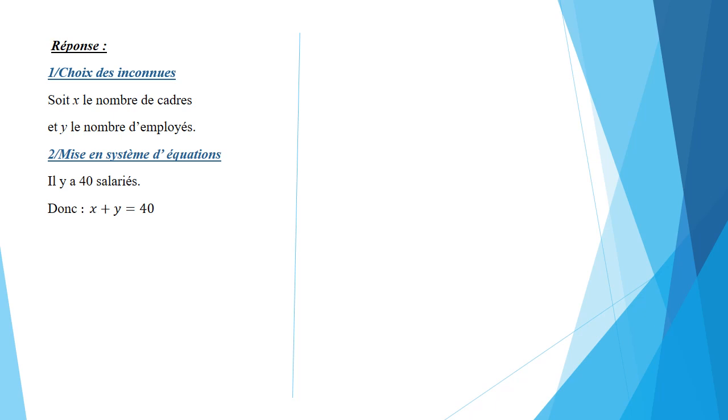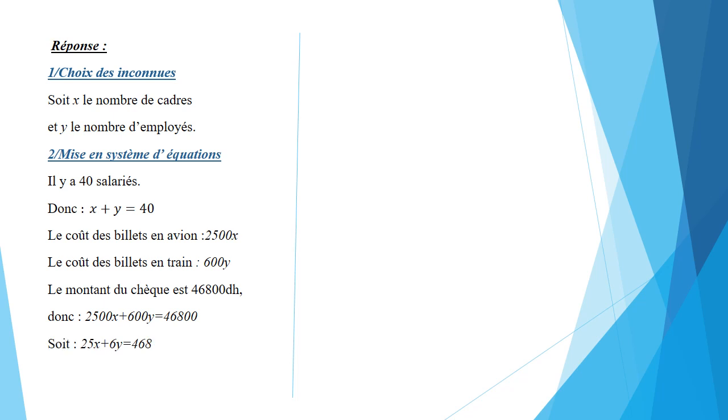Et puisqu'un billet d'avion coûte 2500 dirhams, alors le coût des billets en avion sera 2500X dirhams. Et on sait qu'un billet du train coûte 600 dirhams, alors le coût des billets en train sera 600Y dirhams. On sait que le montant du chèque est 46 800 dirhams. Alors, on aura l'équation suivante: 2500X plus 600Y est égal à 46 800. Et en simplifiant cette équation, on obtient 25X plus 6Y est égal à 468.